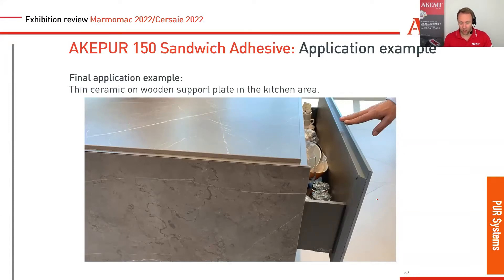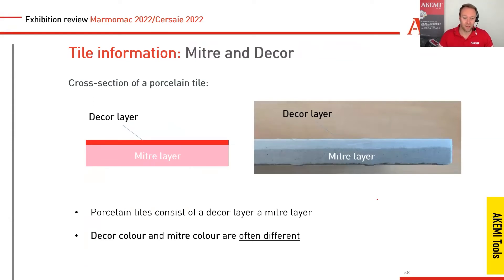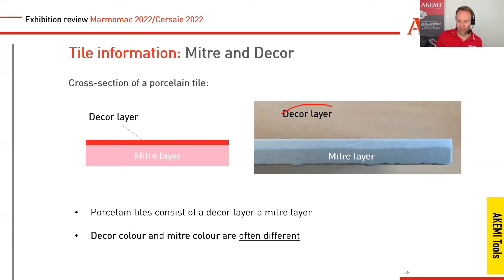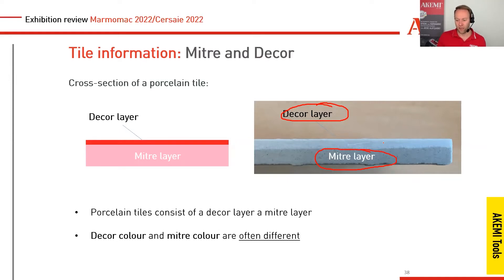We stay with tiles and porcelain tiles, and I want to show you the difference in bonding techniques. A ceramic or porcelain tile is formed from two materials: a decor layer — the color, imprint, and design — and the mitre layer, which is sometimes a different color. Some manufacturers produce both in the same color, but usually you have a top decor layer and a different-colored mitre layer underneath. This becomes important for 45-degree mitre bonding.